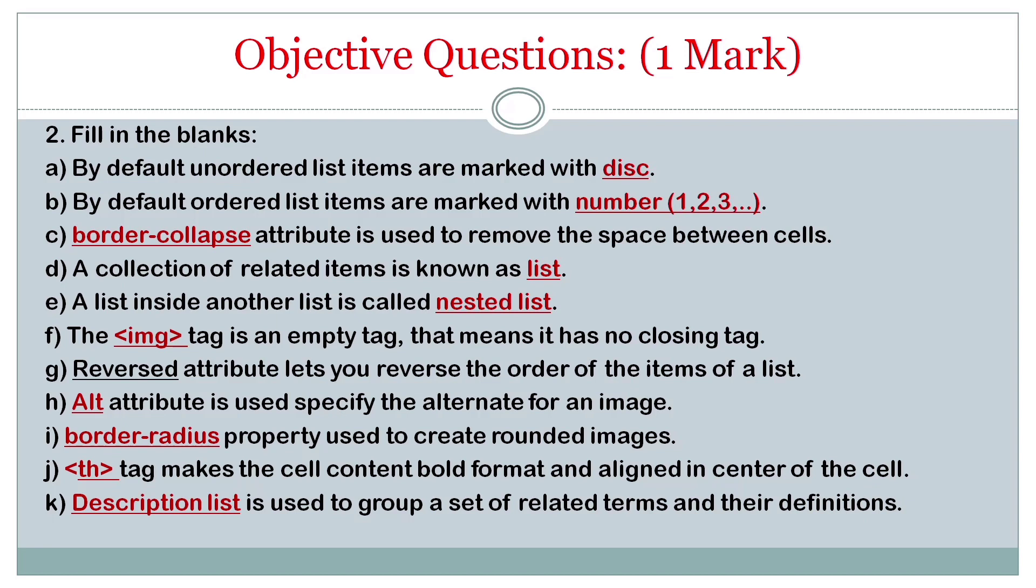A list inside another list is called nested list. The IMG tag is empty - the IMG tag is an empty tag, that means it has no closing. Reversed attribute lets you reverse the order of the list items.